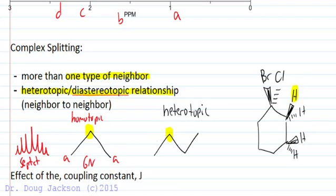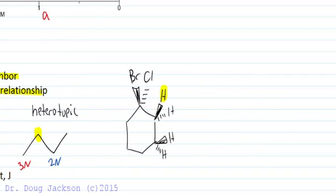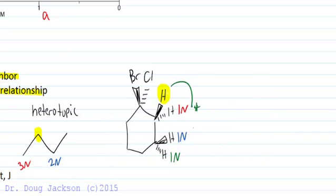A heterotopic neighbor — such as we have here, labeled A to B — has three neighbors of one type and two neighbors of the other. These are heterotopic to one another because if you change one to a deuterium, you get constitutional isomers — a different name for the compound. So here we get complex splitting or a multiplet. The other way is to have diastereotopic neighbors: the highlighted hydrogen has one neighbor of one type, one of another, and then a diastereotopic neighbor. These two are diastereotopic — they split differently and split their neighbor differently — resulting in a multiplet as well.